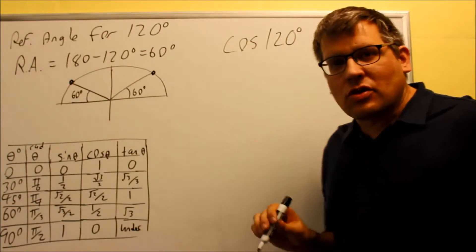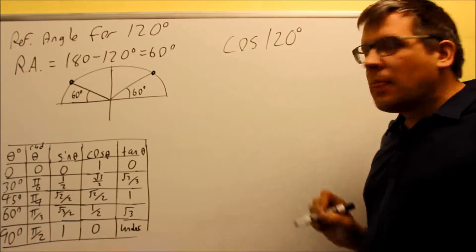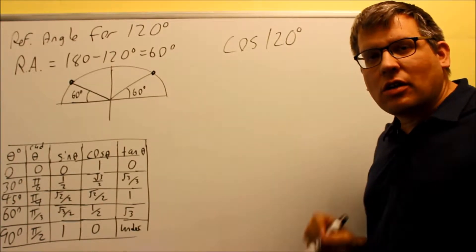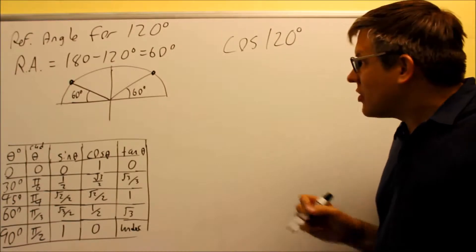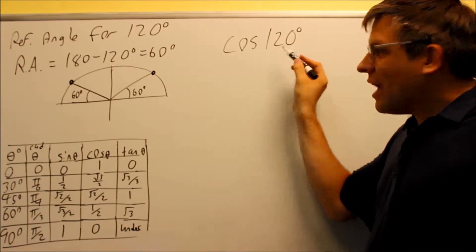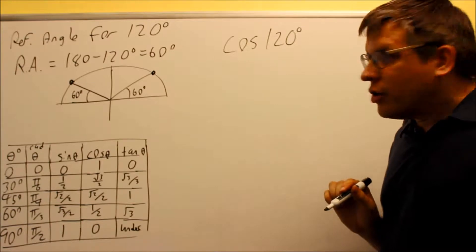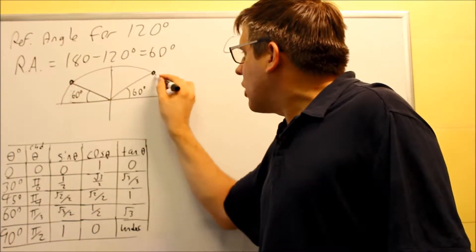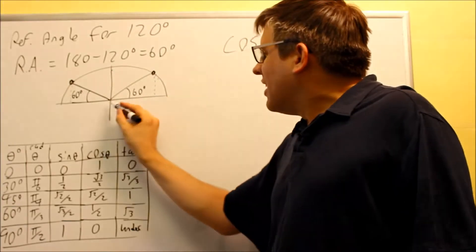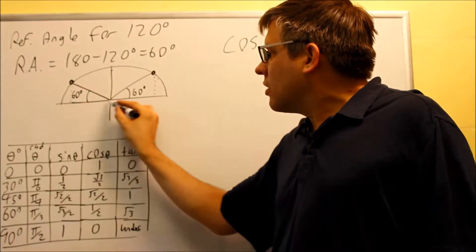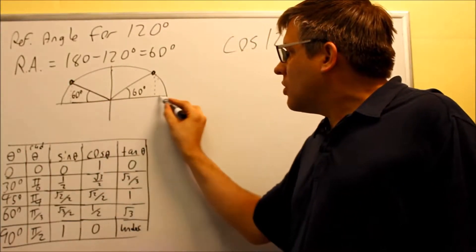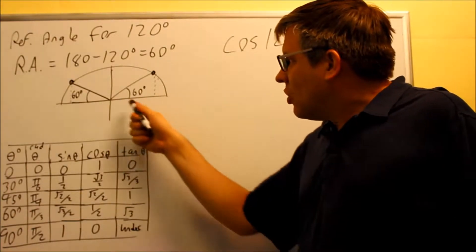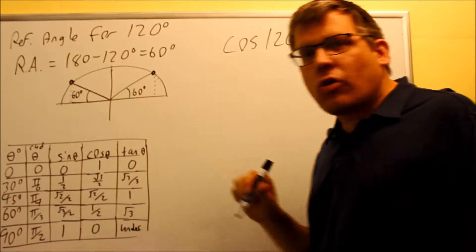What we're getting into next is applying a trig function to the angle itself. Suppose it asks us to find cosine 120. This is asking us for the x value at 120 degrees. If I take these triangles and draw them down here, the distance from here to here is the same as the distance from here to here, except one's going positive and one's going negative.